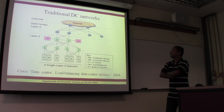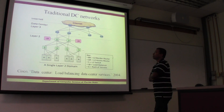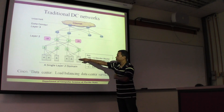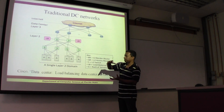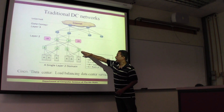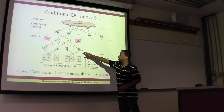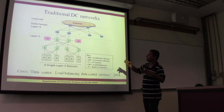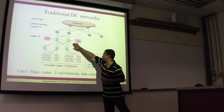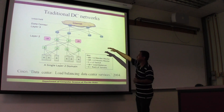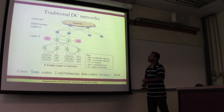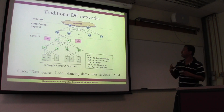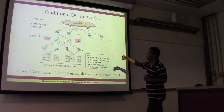This is the topology for a traditional data center network, where we have servers in a rack, then top-of-rack switches, which are aggregated at the next level called the aggregate switches. They are combined into access routers.